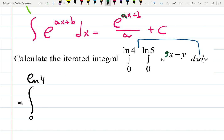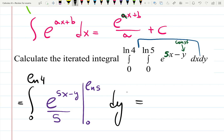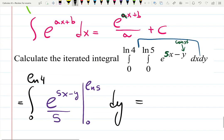So it works only with linear though. In this case 5 is the linear part multiplied by x and y is a constant when you are integrating with respect to x. So it's going to be e to the 5x minus y over 5.